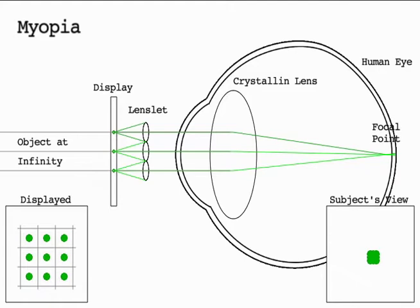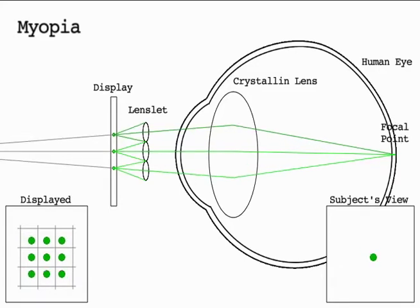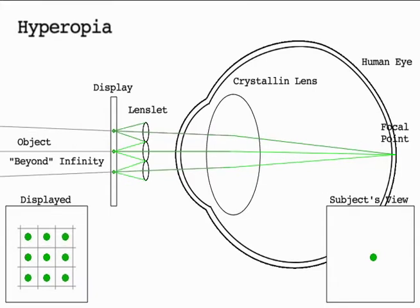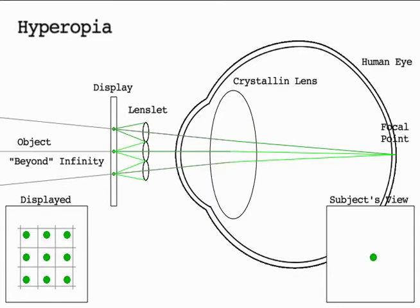For myope individuals — that is, the nearsighted — our system can bring the virtual point closer, resulting in diverging rays that allow those individuals to focus a sharp image on the retina. In the case of hyperopes, that is, the farsighted, moving the pattern apart creates converging rays, which allow these individuals to perceive a sharp image.